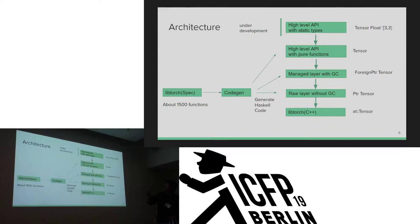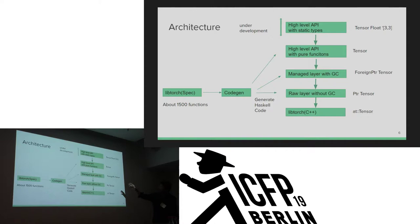What is the problem? It generates three layers. The bottom is PyTorch's C++ APIs. The next layer supports raw pointers, not using garbage collection. The next layer supports managed pointers with garbage collection. The next layer supports a high-level API — pure functions. And the final layer supports static types, but it is under development.